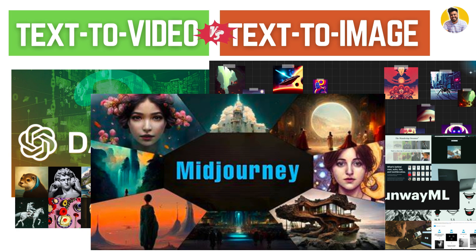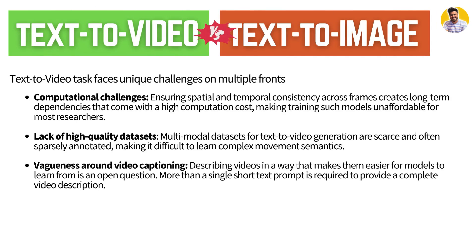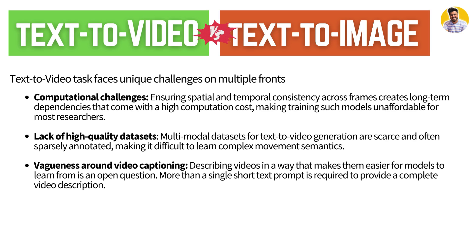Despite the impressive capabilities of diffusion models in text-to-image generation, text-to-video generation is quite hard because it faces many challenges. The first challenge is computational: ensuring spatial and temporal dependencies across frames has a high computational cost. You can't train those models on large video datasets, and there is also a lack of high-quality datasets. There is also vagueness around video captioning — more than a single short text prompt is required to provide a complete video description, which increases the total prompt length.